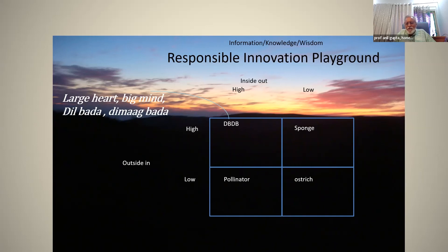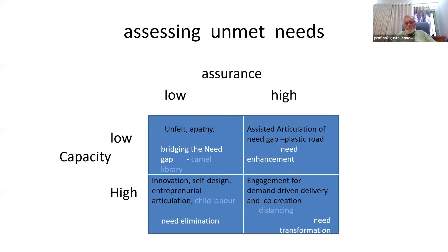We must have a rich taxonomy of reciprocity along with responsibility so that we don't always try to make everyone get payment in money. Sometimes you work with me and solve the problem creatively — co-creation — and that increases my capacity also. There are two dimensions: assurance and capacity. Sometimes you bridge the need gap, sometimes you enhance the need, sometimes you eliminate the need — for example, of child labor — and sometimes you transform the need. There are different ways to reciprocate. We must have this rich taxonomy so we recognize that not every form of reciprocity is monetary.